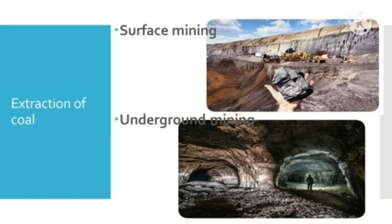Coal reserves can be found in about 70 countries worldwide. The largest coal reserves are available in the United States, Russia, China, Australia and India. The United States is the international leader in coal reserves, with nearly 30% of the world's supply. Coal mining was started in India in 1774. India now ranks third among the coal producing countries in the world. United States of America and China have two thirds of the world's coal reserve.